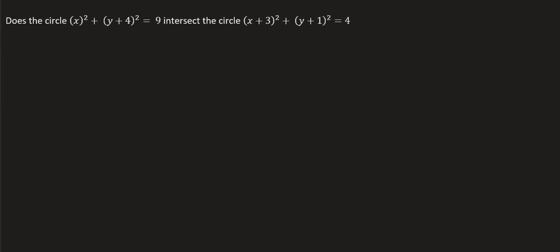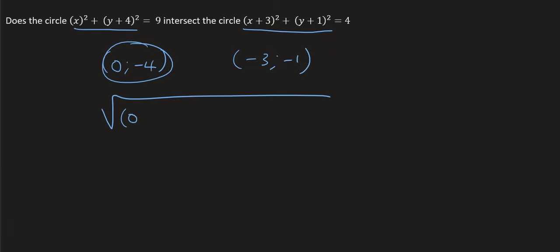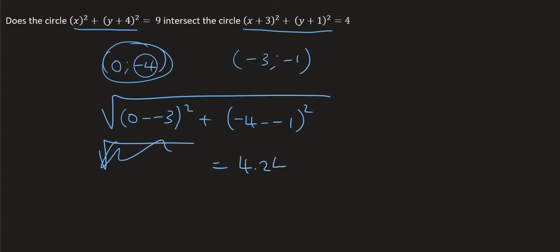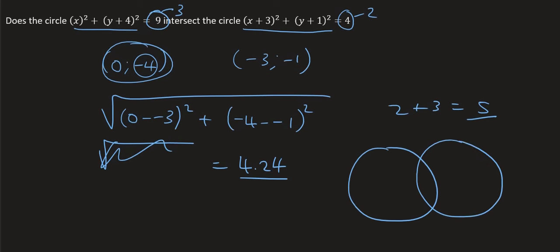Let's try another example. The center of the first circle is (0, -4) and the center of the second circle is (-3, -1). Using the distance formula: the square root of (0 - (-3))² + (-4 - (-1))² gives an answer of 4.24. That's the distance between the two circle centers. The radius of the first circle is 3 and the radius of the second is 2. So 2 plus 3 is 5, and since the sum of the radii (5) is greater than the distance between the centers (4.24), the two circles will intersect.